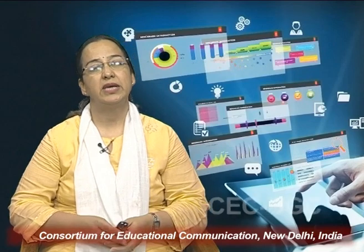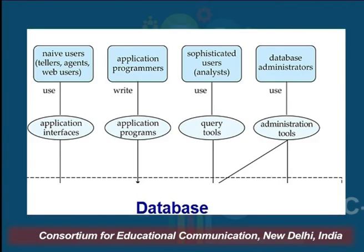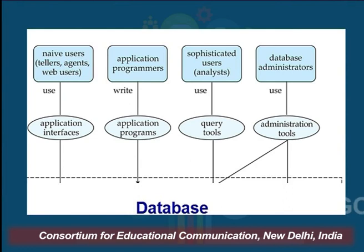As you can see on the screen, database users are basically of four types: one is a naive user, then we have application programmers, then we have sophisticated users, and finally we have database administrator. The first three categories are collectively known as database users, and the last category is about database administrator.